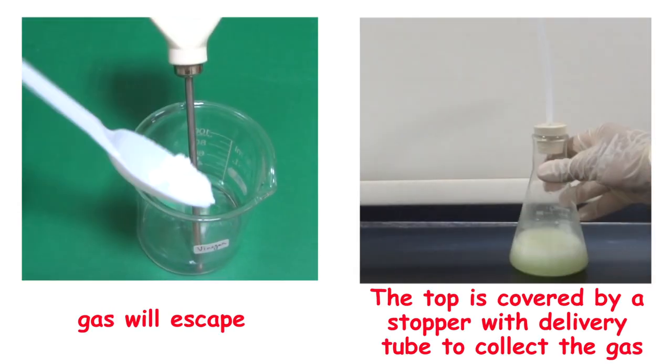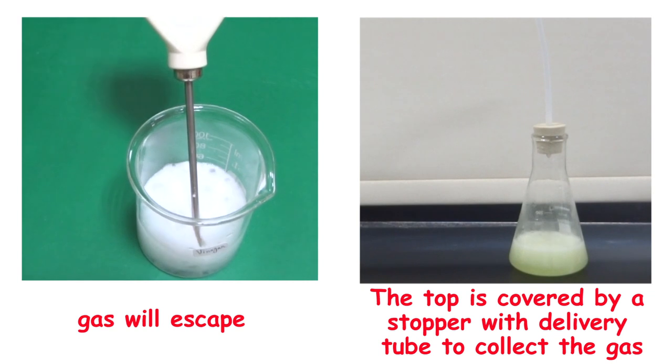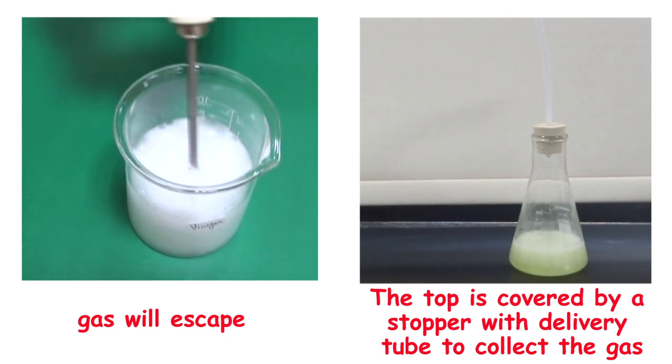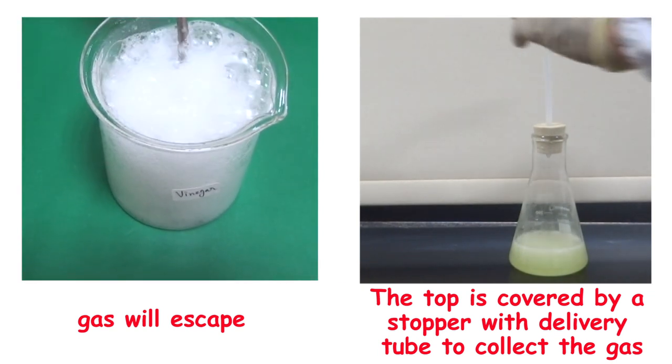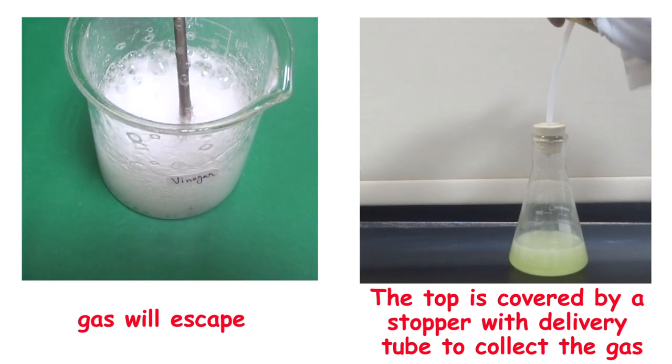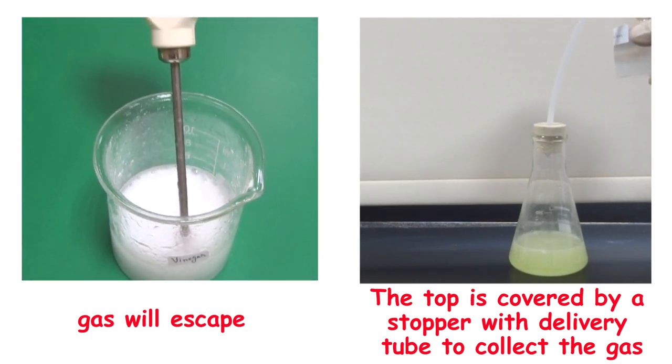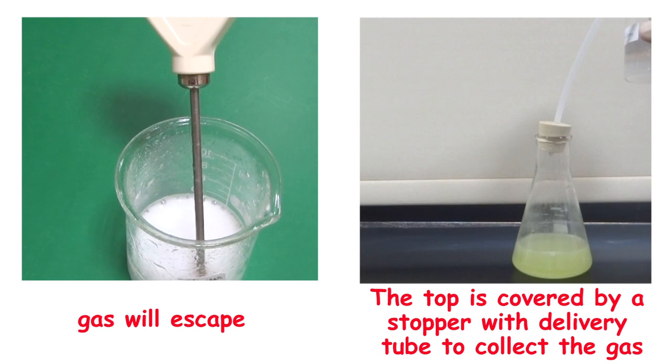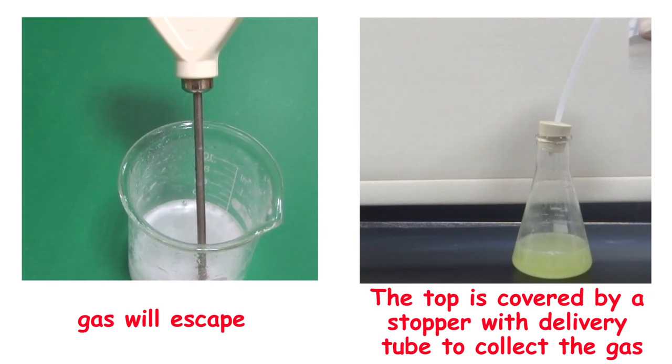The gas from a chemical reaction will escape when it's done in a beaker. While in a conical flask, the top is closed by a stopper with a delivery tube, so the gas is recuperated.